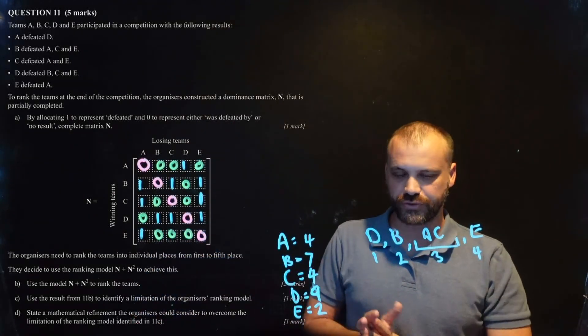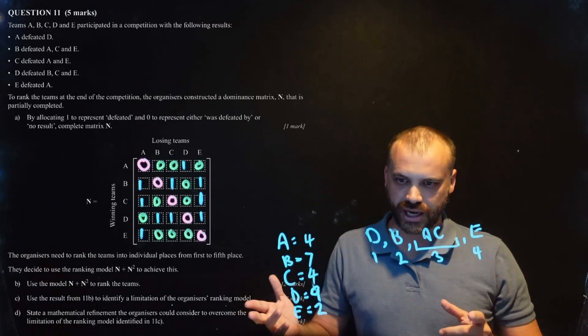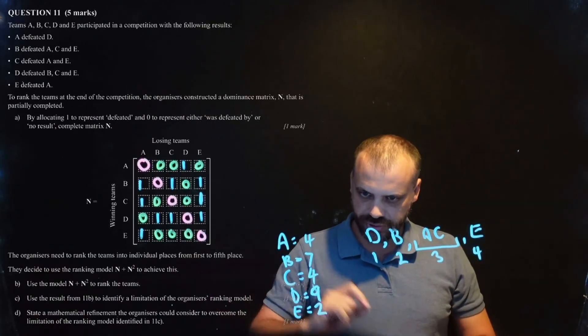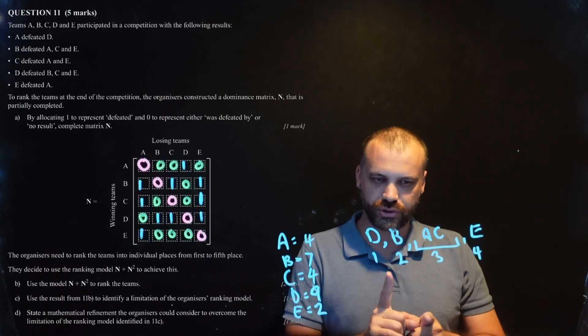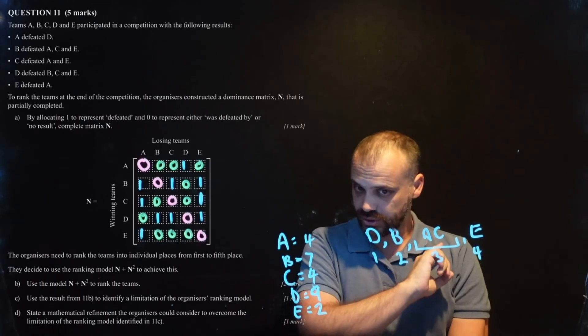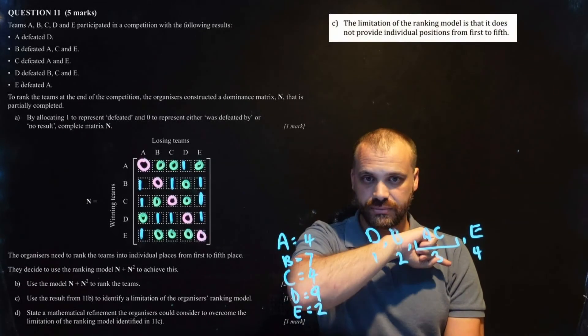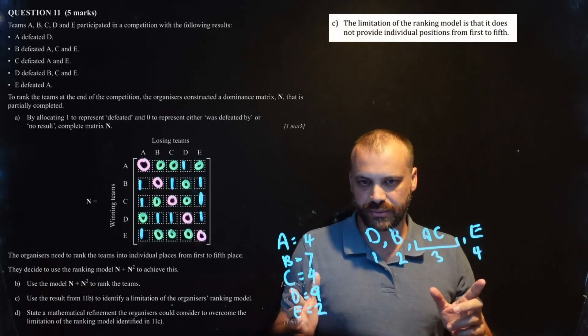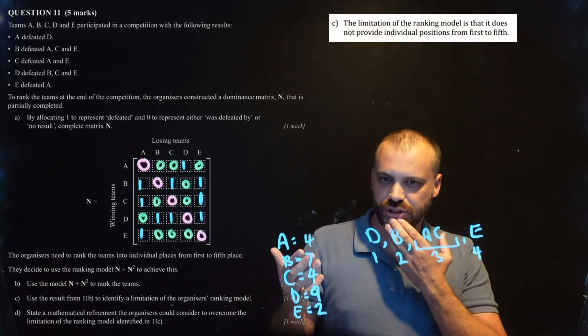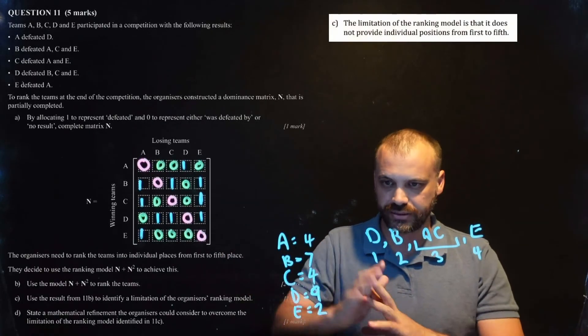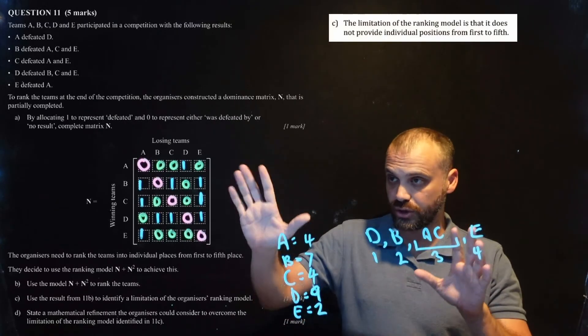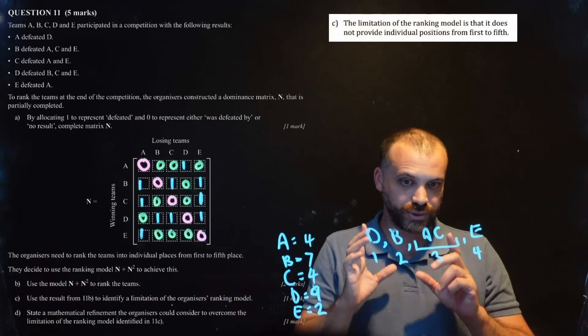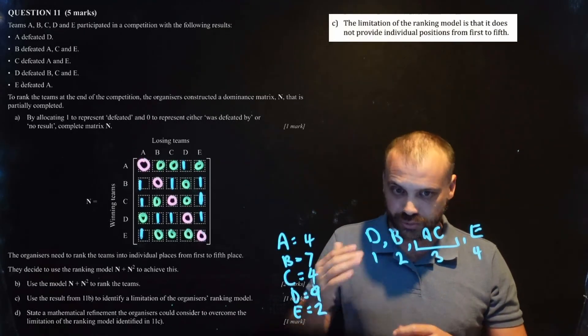Now, part C and part D are rare questions from the QCAA where you're asked to find a limitation or a mathematical refinement. So, let's see exactly what the QCAA was expecting for part C. Use the result to identify a limitation of the organizer's ranking model. So, have a think about it. This is what the QCAA says the limitation is. The limitation of the ranking model is it does not provide individual positions from first to fifth. Now, are there other limitations that you could have come up with? Sure, there doesn't seem to be any indication of what would happen if there was a tie, perhaps. Had to double check that. No conversation about a tie. So, I think a limitation might be there's no provision here for a tie, if someone wasn't to win or lose. But, this is the limitation that the QCAA was hoping for. It's one that was hoping you'd find. But, they would allow others.